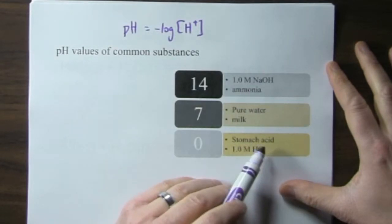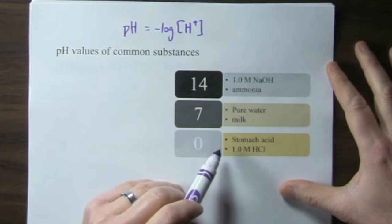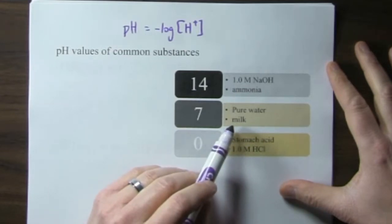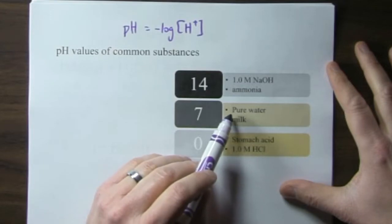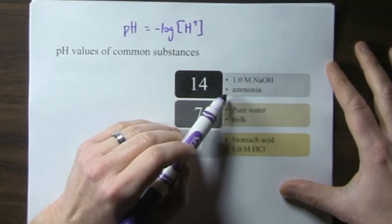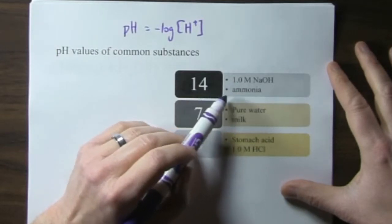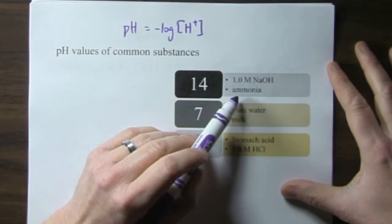Stomach acid is acidic, has a pH of about 1. Milk is slightly acidic, it's a little less than pH 7 which is for pure water. Ammonia we saw on the previous slide is a base, it's a weak base, so it has pH of about, in water about 12, household ammonia.